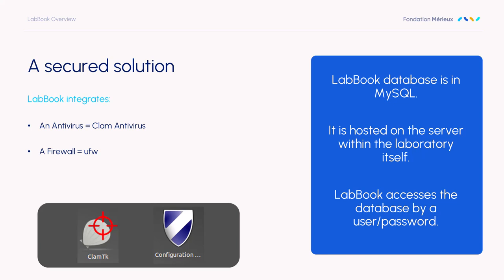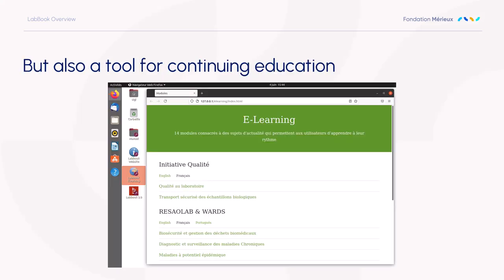Labbook is not only a software alliance — it is also a way to share knowledge. When you install Labbook, you have access to all the e-learning content that Merrill Foundation has developed. They are installed locally on your computer, so you do not need internet to access them. At any time, you can do continuous training for yourself and for all the staff of the lab.